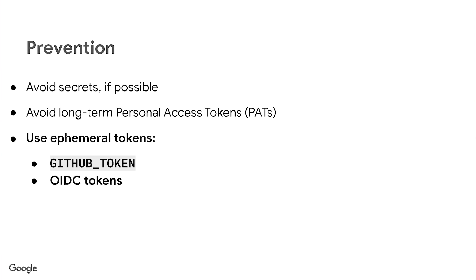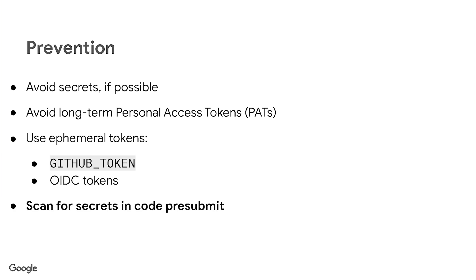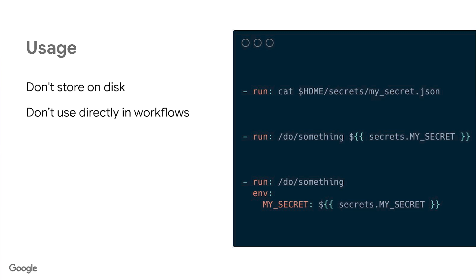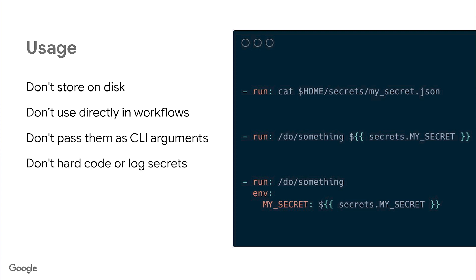A workflow can now exchange an OIDC token for a cloud provider short-lived access token that's only valid for a single job. You can also implement secret scanning to prevent secrets from being pushed to a remote repository. When you do need secrets, don't store them on disk, avoid using them directly in workflow scripts, don't pass secrets as CLI arguments, and definitely don't hard code them into your source code or log them.